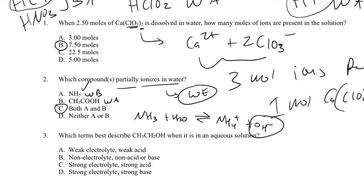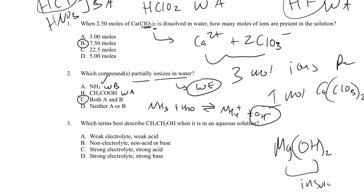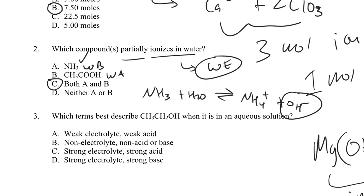Mg(OH)2 is often misidentified as a weak electrolyte, but according to our solubility chart it's insoluble. We only assign electrolytic property terms to things that dissolve in water. For Mg(OH)2, just say it's insoluble — don't classify it as any type of electrolyte or acid or base.